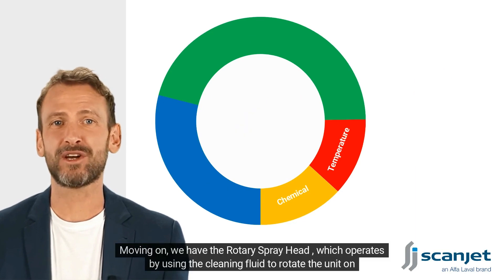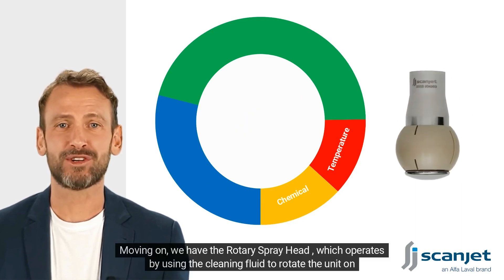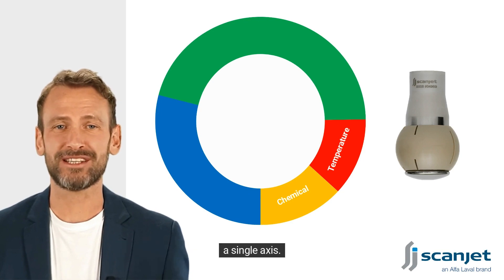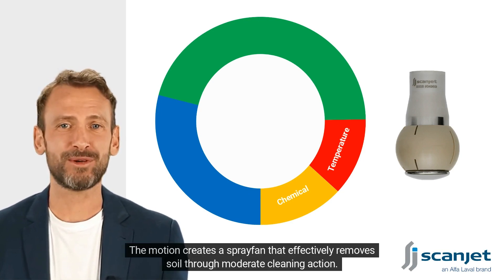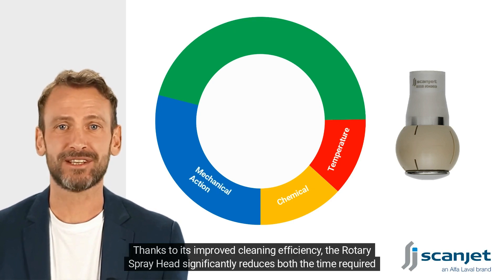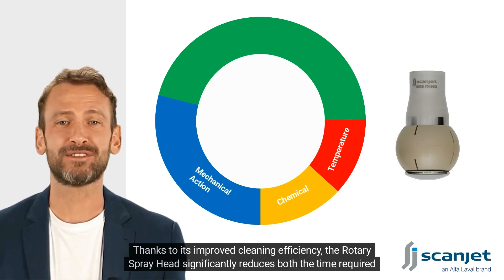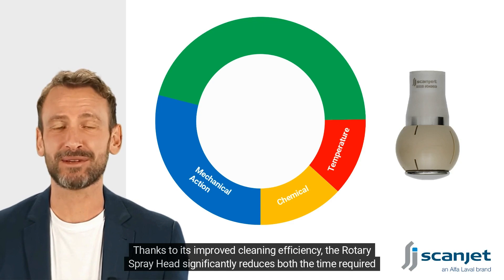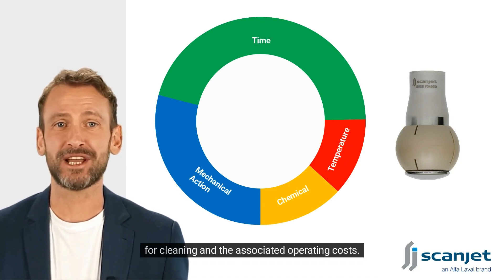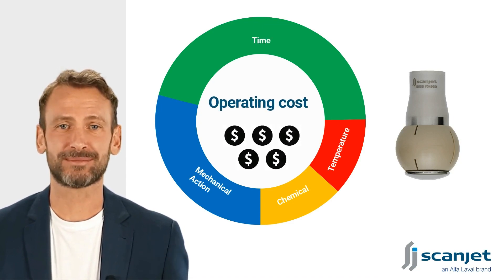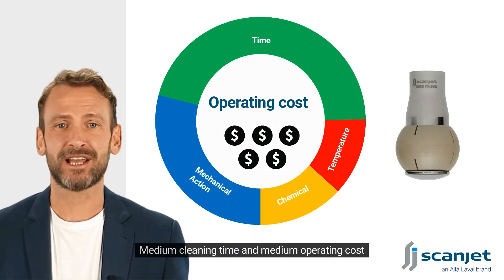Moving on, we have the rotary spray head, which operates by using the cleaning fluid to rotate the unit on a single axis. The motion creates a spray fan that effectively removes soil through moderate cleaning action. Thanks to its improved cleaning efficiency, the rotary spray head significantly reduces both the time required for cleaning and the associated operating costs — medium cleaning time and medium operating cost.